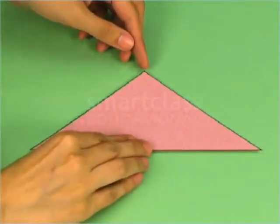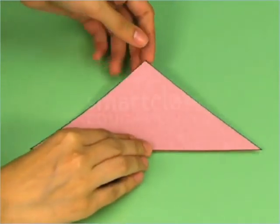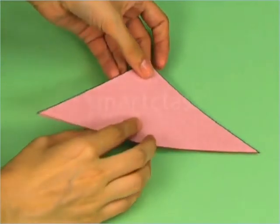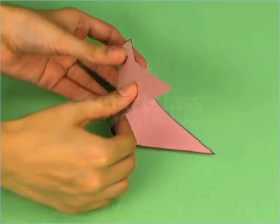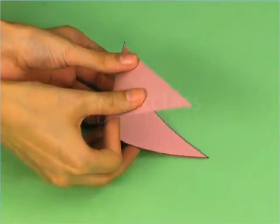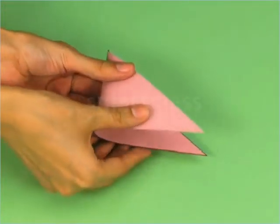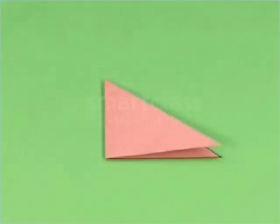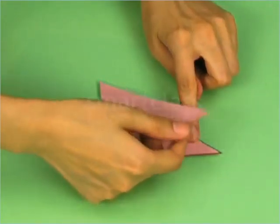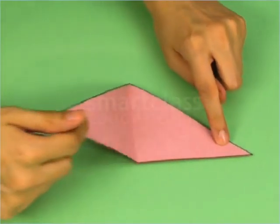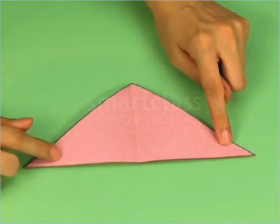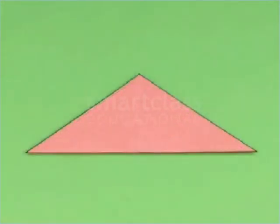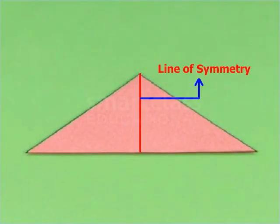Recall that if you fold a figure in half so that its two parts coincide, the line of fold is the line of symmetry.